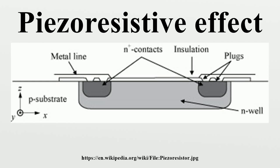History: The change of electrical resistance in metal devices due to an applied mechanical load was first discovered in 1856 by Lord Kelvin. With single-crystal silicon becoming the material of choice for the design of analog and digital circuits, the large piezo-resistive effect in silicon and germanium was first discovered in 1954.